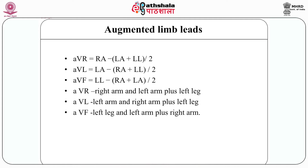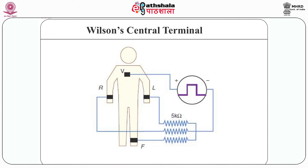Now we are going to talk about the augmented limb leads. The exploring electrode forms a positive input as: right arm electrode for AVR, left arm electrode for AVL, and left leg electrode for AVF. The reference potential for the augmented lead is formed by connecting the two limb electrodes other than the exploring electrode. AVR equals right arm minus (left arm plus lower limb) divided by 2. AVL equals left arm minus (right arm plus lower limb) divided by 2. AVF equals lower limb minus (right arm plus left arm) divided by 2.